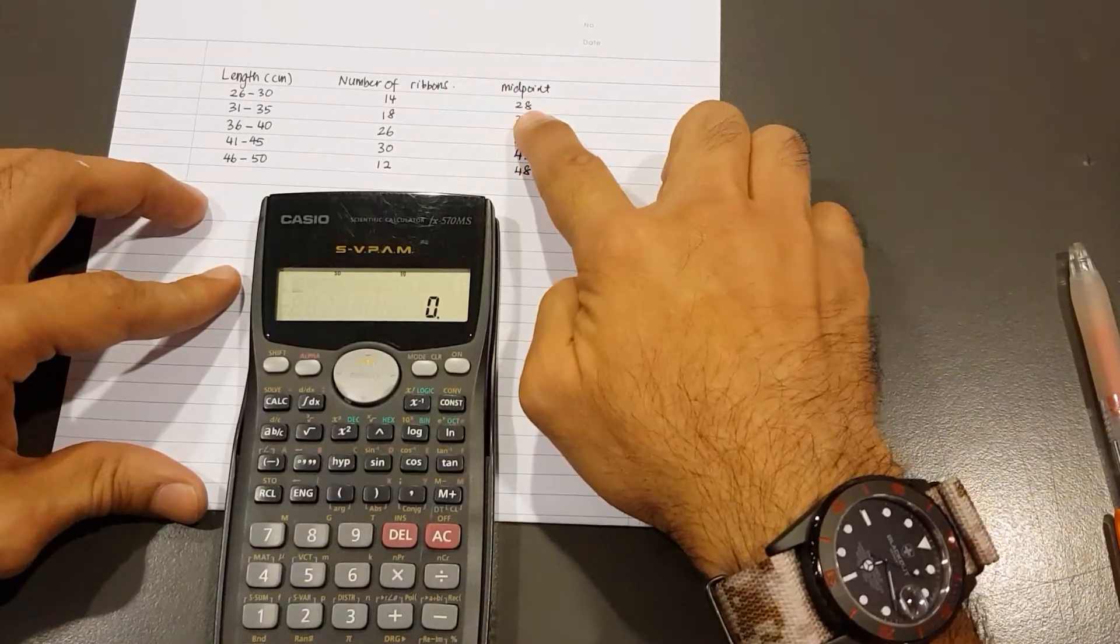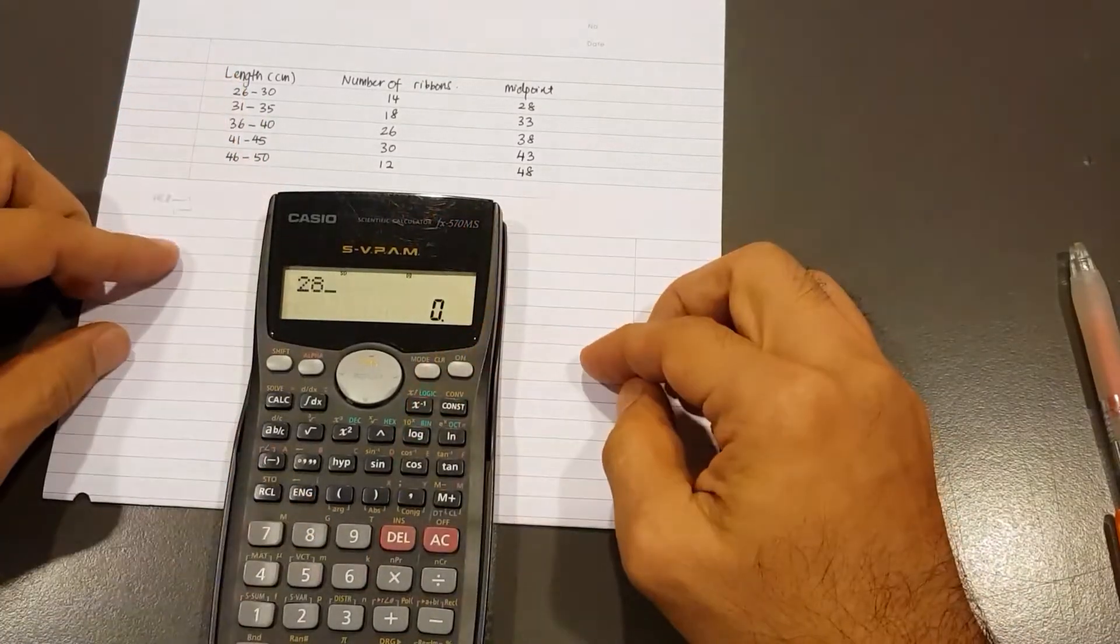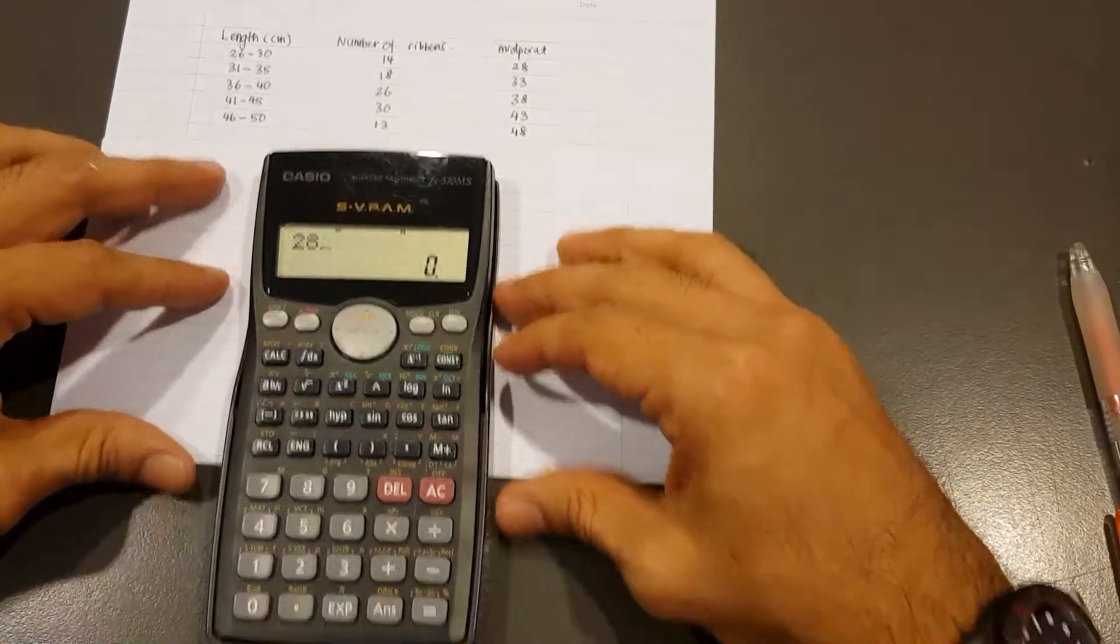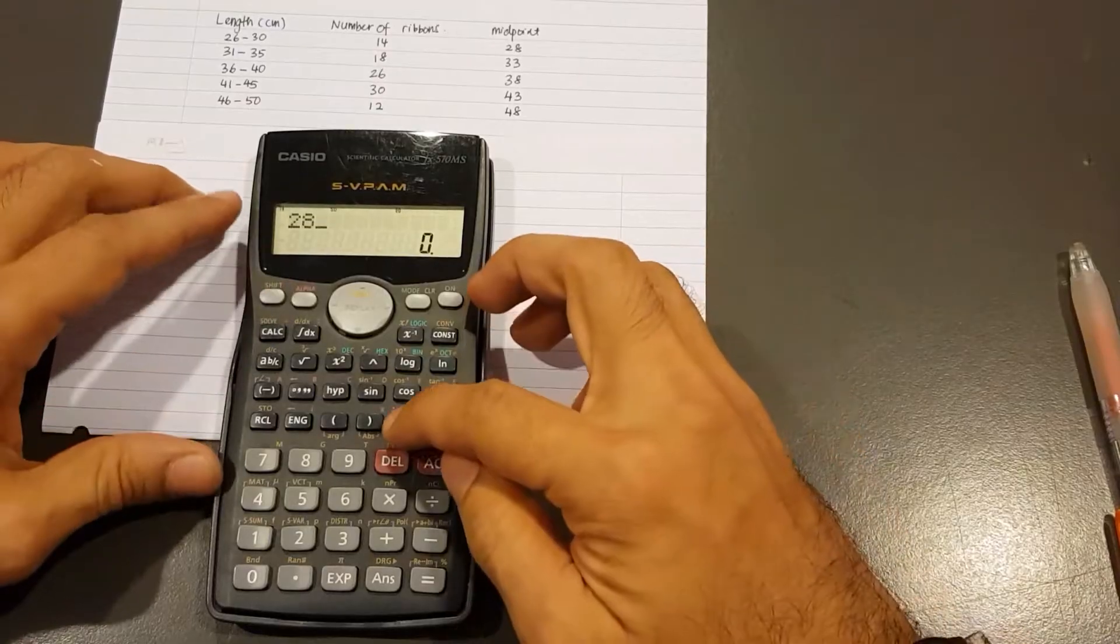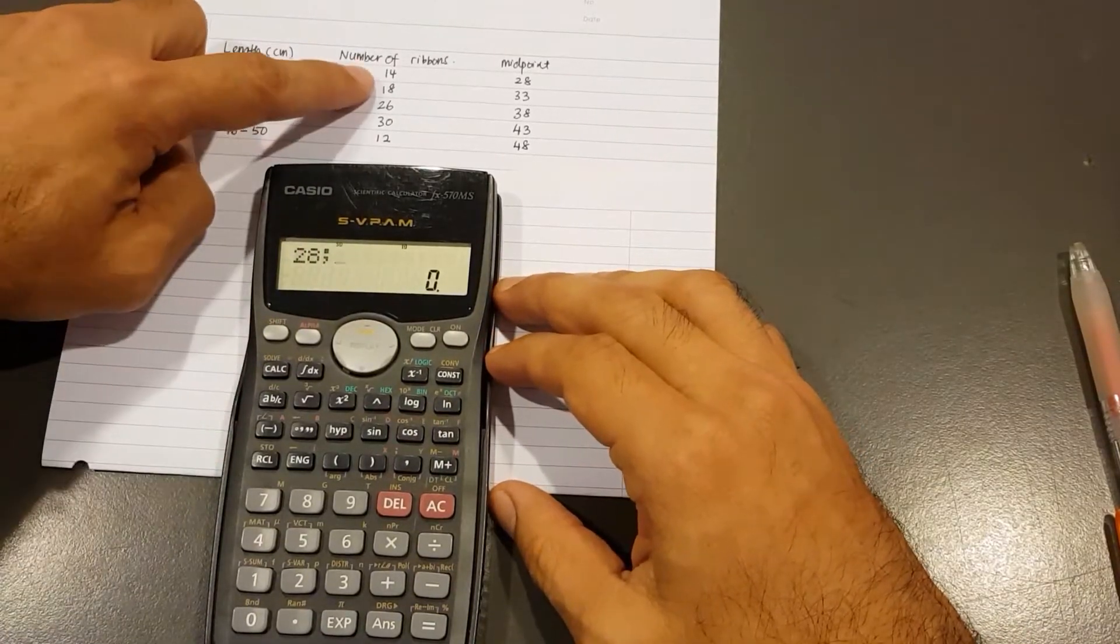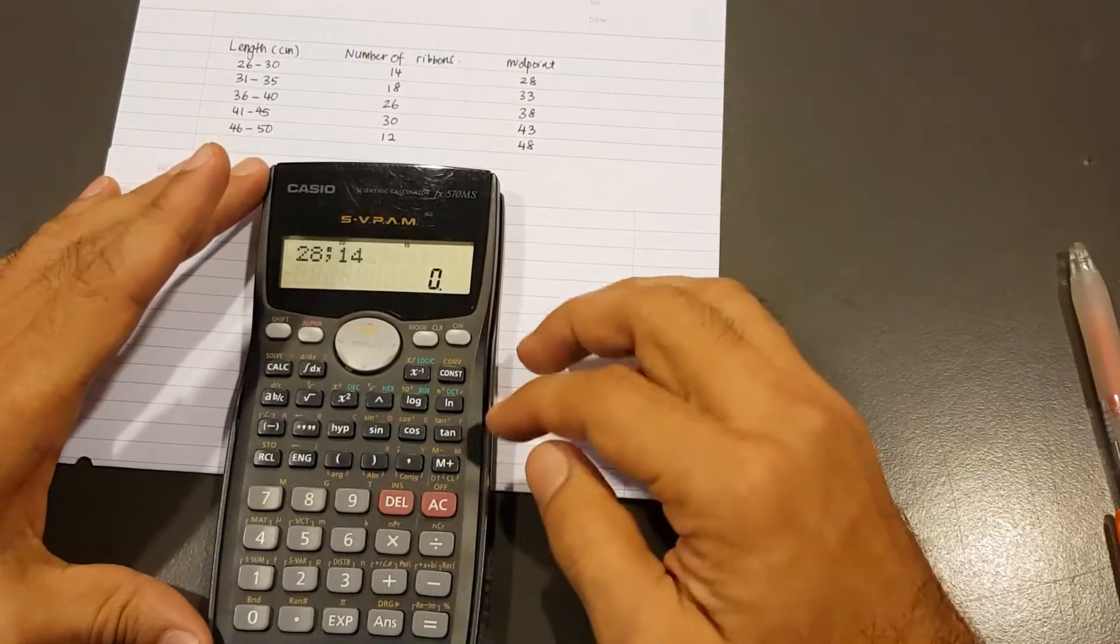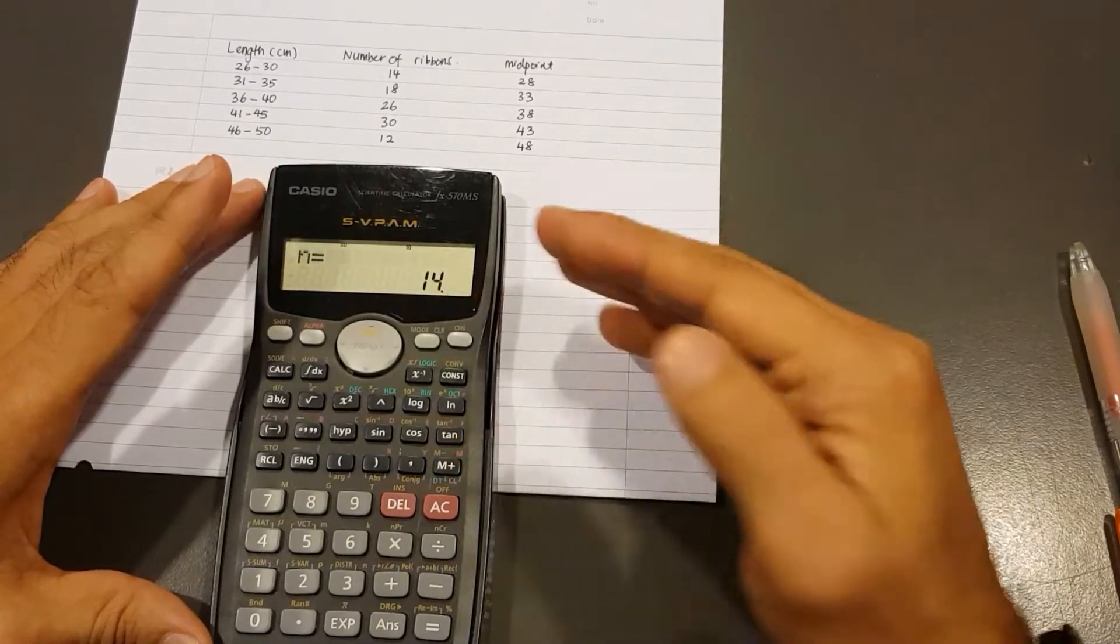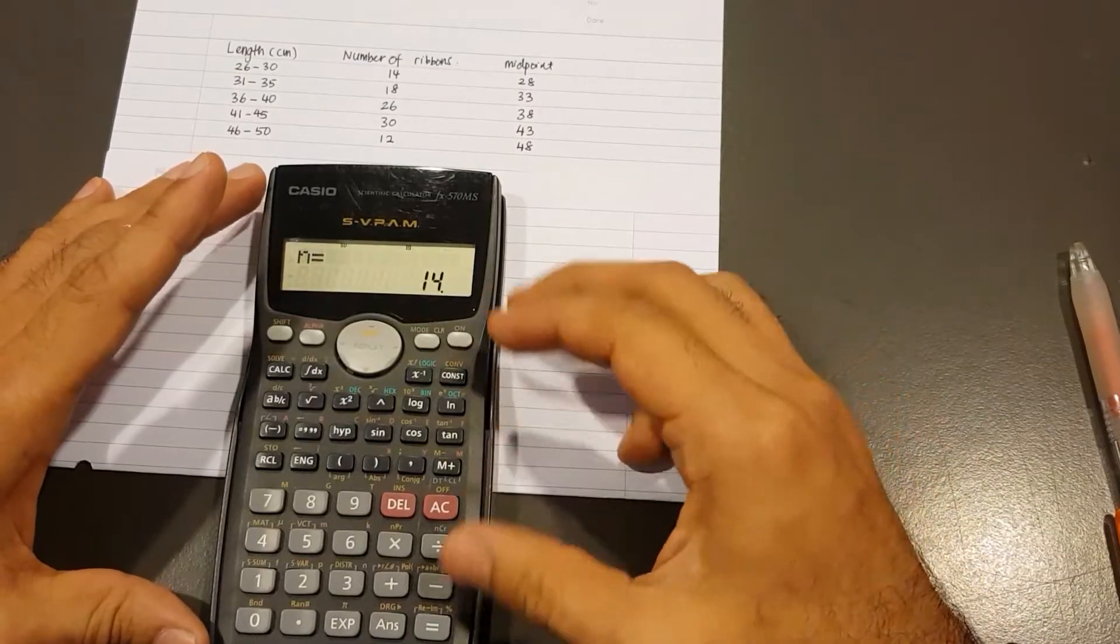So the first midpoint is 28. The first frequency is 14. So I'm going to type 28. Now to put the data in correctly, you see there's a comma button right there. But I need to press shift and comma and that will get that semicolon. The frequency is 14. So 1, 4. And now to store the data, go ahead and press M plus. So when it shows 14, it means it's counting the frequency as we key the data one by one.